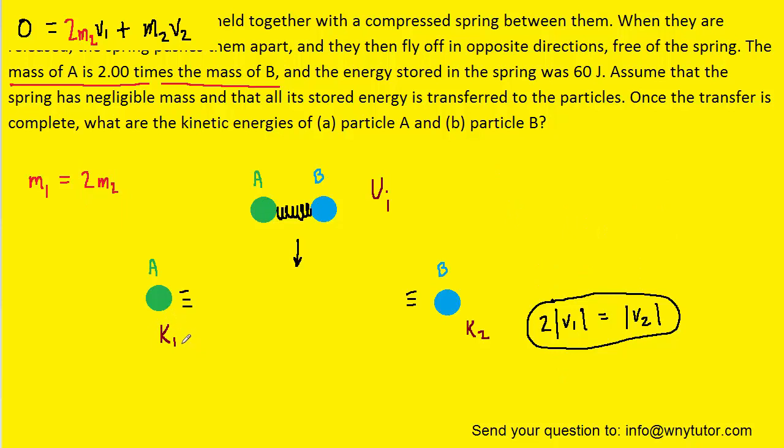Let's turn next to the kinetic energy of particle A, what we have called k1. We know that kinetic energy is equal to one-half times the mass of the object times its velocity squared.